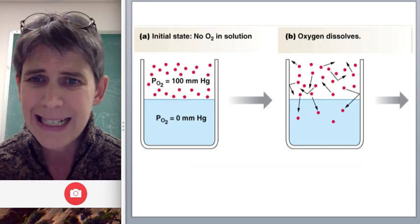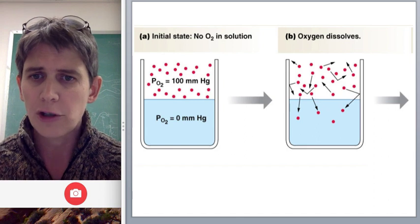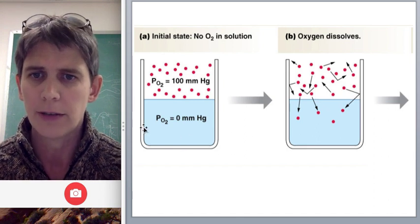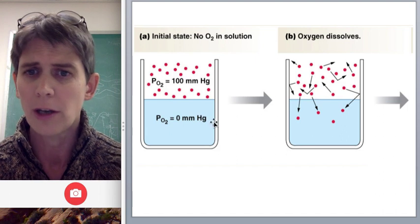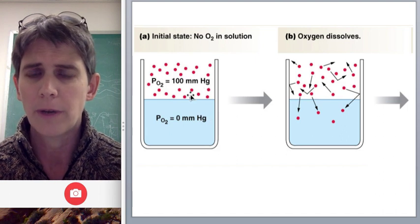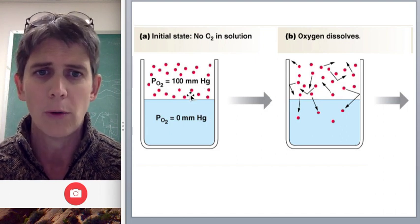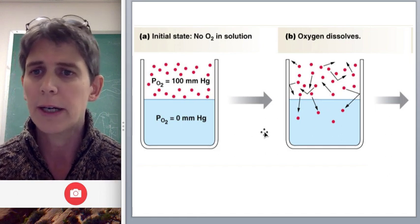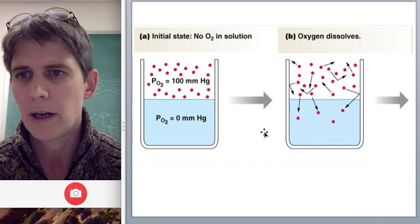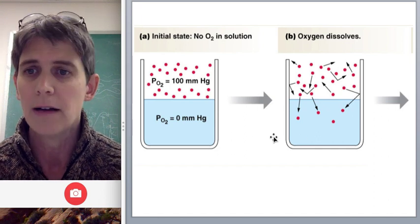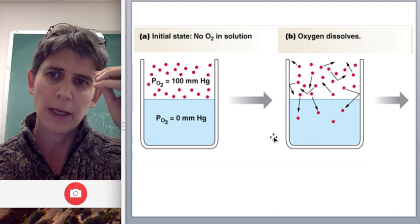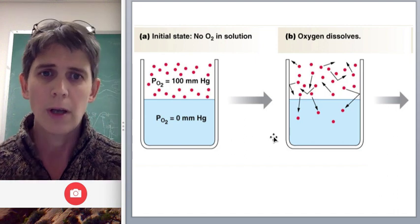So here's this container. Initially, let's say there's no oxygen in this water. You put a bunch of oxygen in the air above that water and you let the oxygen dissolve. Naively, we might assume that we're going to end up with the same amount of oxygen in the water as in the air. And that would be true if oxygen were equally soluble in air and water. But in fact...